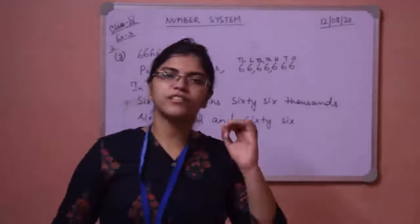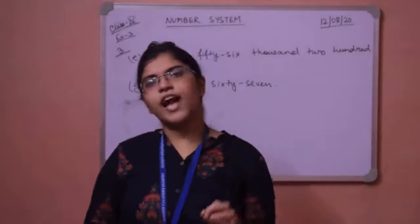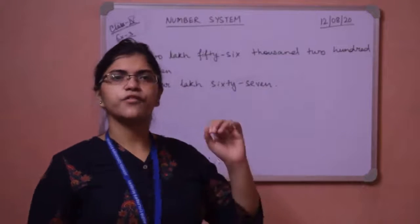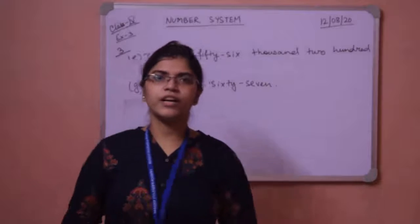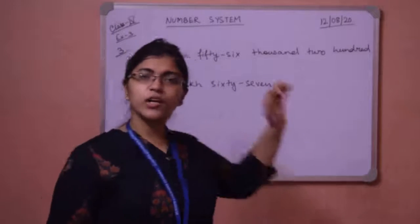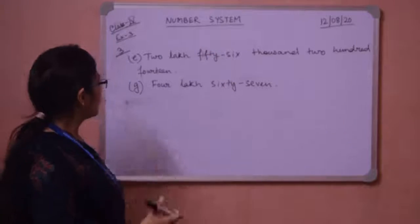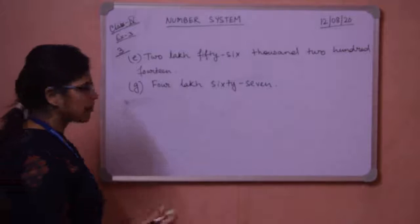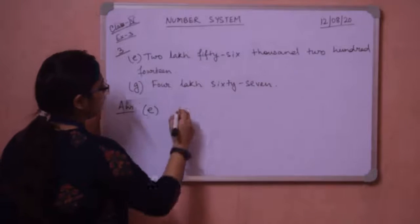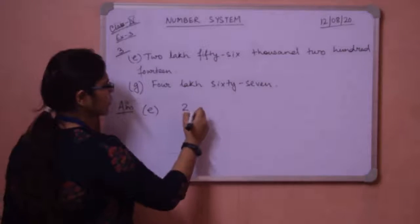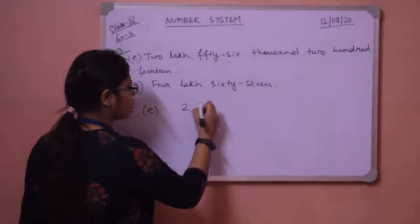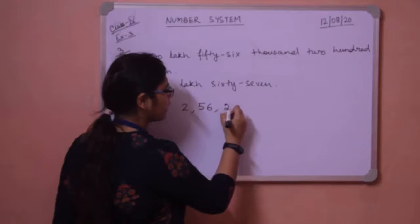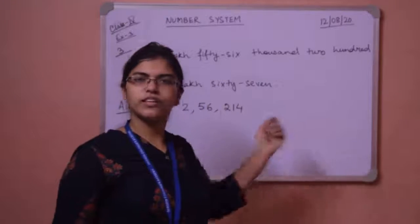Now we move on to sum number 3. The question says you have to put these numbers in figures, and after putting them in figures you have to put commas. These numbers are given in words and you have to put them in figures. Sum number 3D says: 2 lakh, 56 thousand, 214. So after lakh there is a comma: 2, then comma, then 56 thousand — another comma — then 214. So the number in figures with commas is 2,56,214.